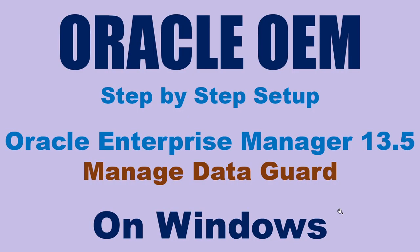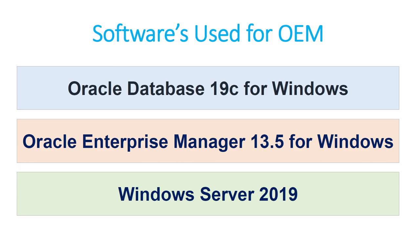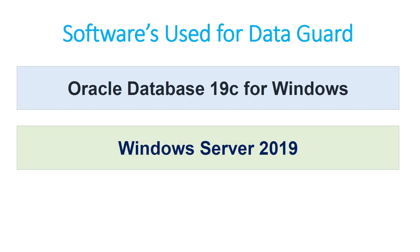In this tutorial we'll talk about how to manage the DataGuard environment in OEM 13.5 installed on Windows. The DataGuard environment is running on Windows, and OEM is also running on Windows. The OEM repository database is running on Oracle Database 19c, and everything is set up on Windows Server 2019 — the DataGuard, OEM, and the database.